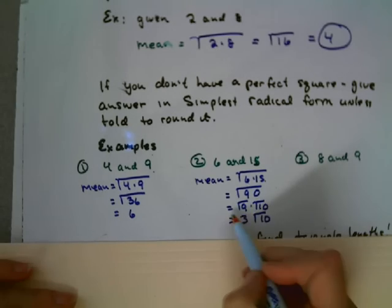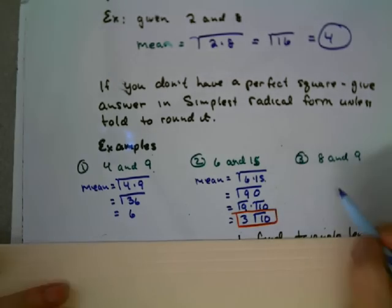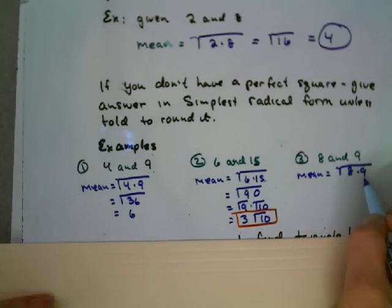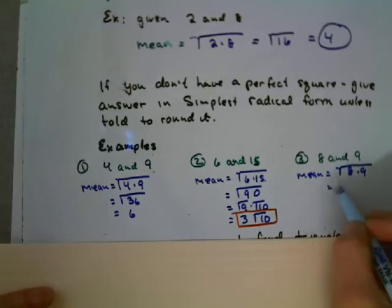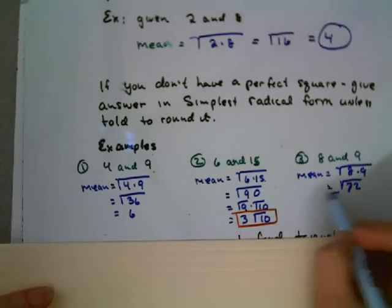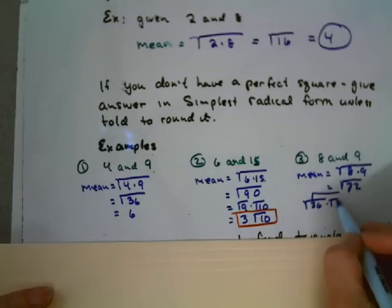Number 3, my mean is going to be the square root of 8 times 9. Well, if I look at that, I can see right here, if I multiply that, I have the square root of 72. Well, that's not a perfect square. I might just look at it from here. There's two ways to go about this. If I knew that square root of 72 and I was good at my multiplication, I'd say, wow, that's the same as the square root of 36 times the square root of 2. And the square root of 36 is 6. So I get 6 square root of 2.